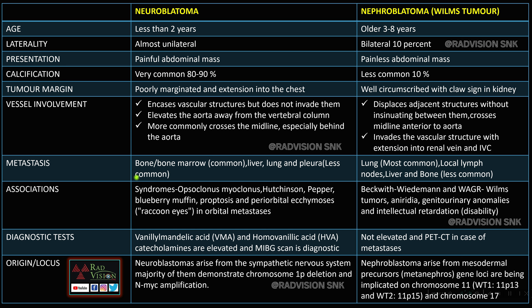Metastasis is most common to bone and bone marrow in neuroblastoma; liver and lung are less common. For nephroblastoma, lung is the most common site, along with local regional lymph nodes. Syndromes associated with neuroblastoma include opsoclonus-myoclonus syndrome; others are Hutchinson's, Pepper, blueberry muffin, proptosis, and raccoon's eye (periorbital ecchymosis from orbital metastasis). Nephroblastoma is associated with Beckwith-Wiedemann and WAGR syndromes.